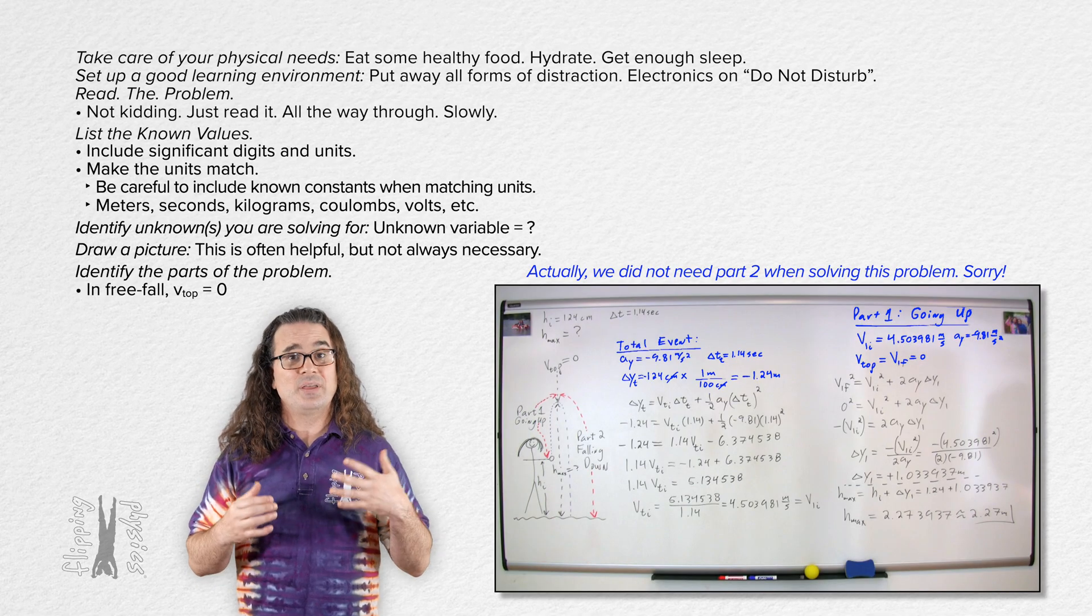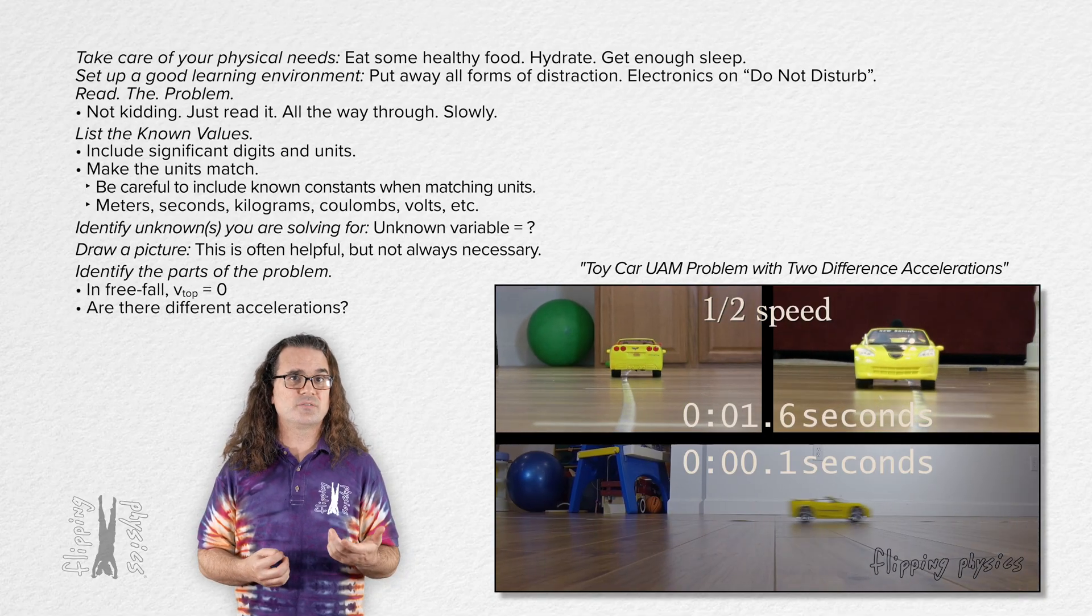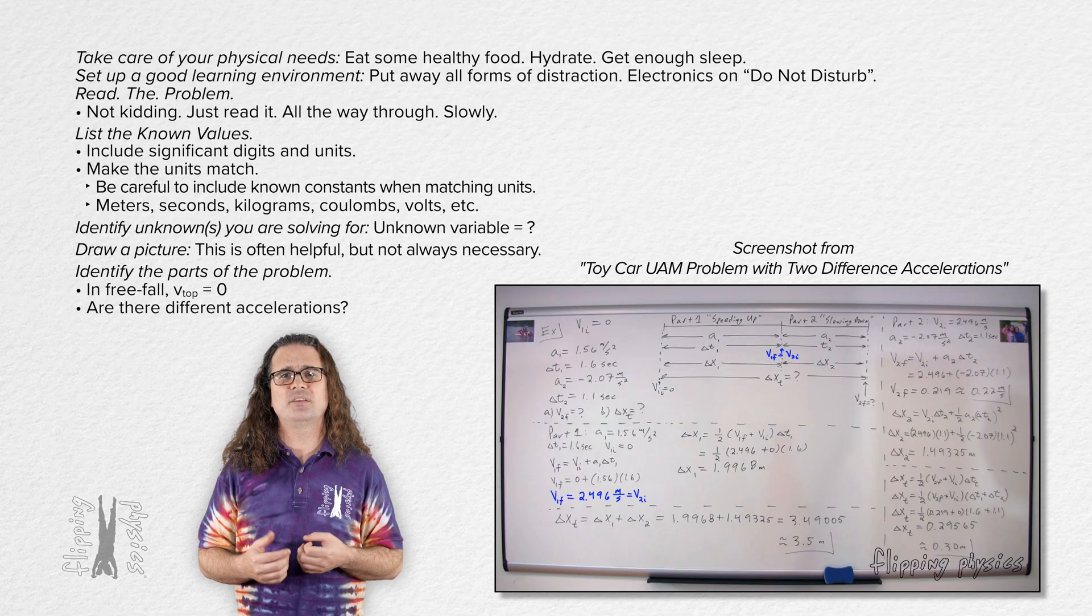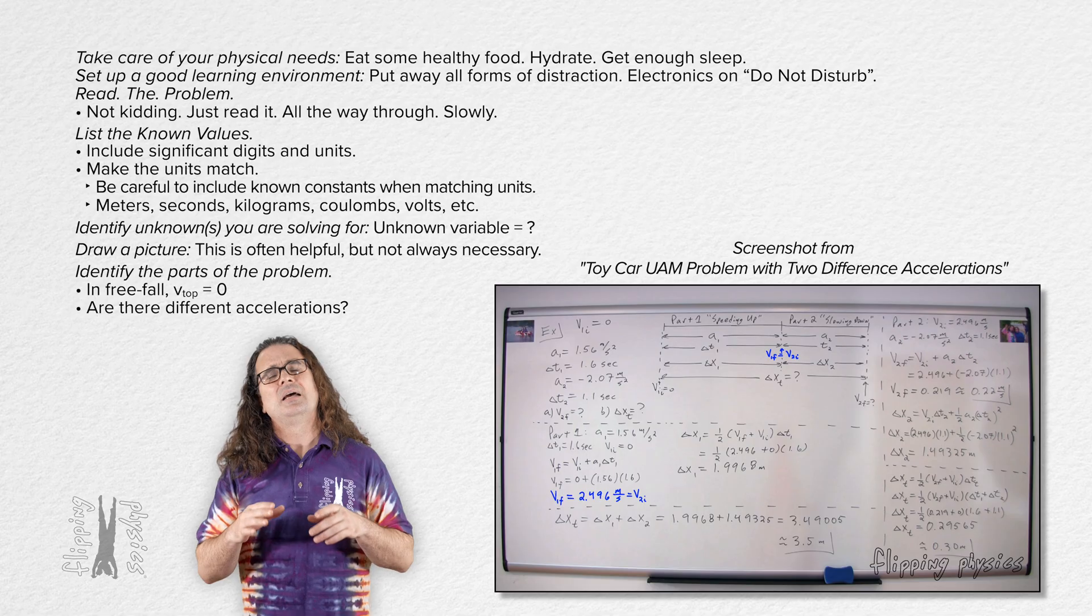Or, as I show in this video, it could be that there are two different accelerations for the same object, one after the other. When that is the case, the final velocity for the first part is the same as the initial velocity for the second part.